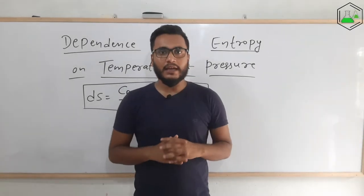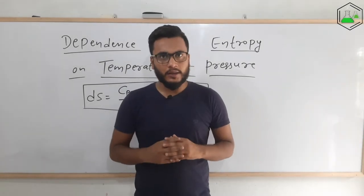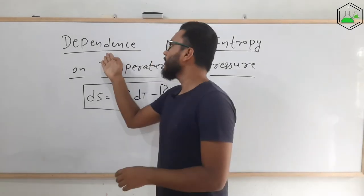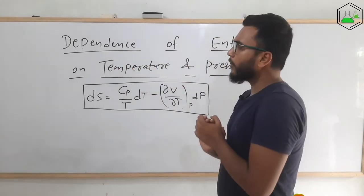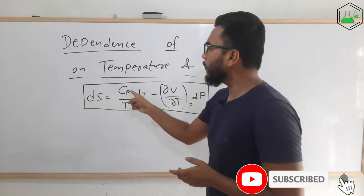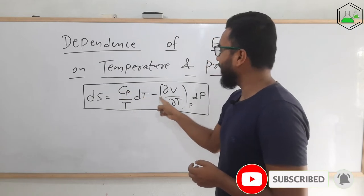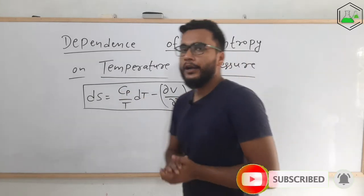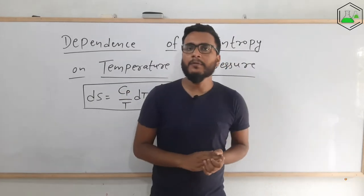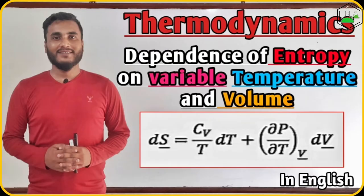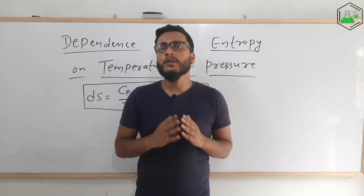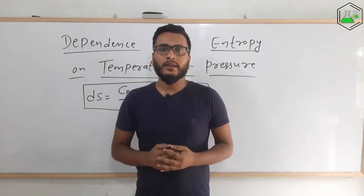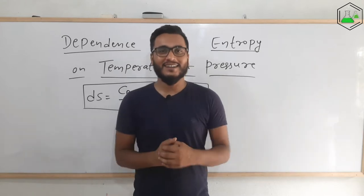Hello friends, welcome to GT Science Tutorial. In this video, I am going to explain the dependence of entropy on temperature and pressure. That is, we are going to derive this formula: dS = Cp/T · dT − (∂V/∂T)_P · dP. In my previous video, we already saw the dependence of entropy on temperature and volume. Today's derivation is going to be very important because it is frequently asked in examinations. So let's start.